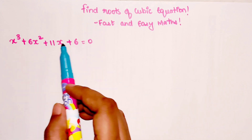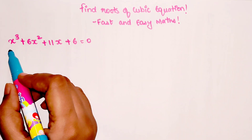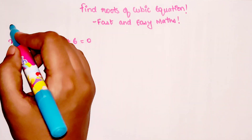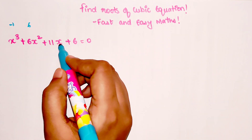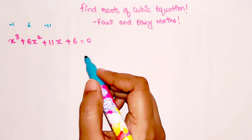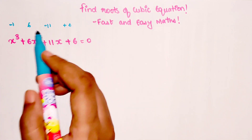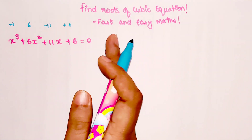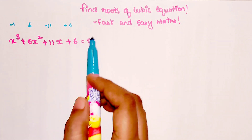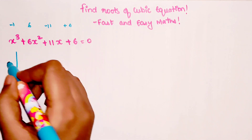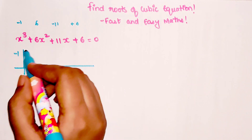We have everything in plus here, so putting plus one will not give zero. Let's try minus one: (-1)³ gives minus one, plus 6 into (1)² gives plus six, plus 11 into (−1) gives minus eleven, and plus six stays plus six. Six plus six is twelve, minus one minus eleven is minus twelve, so the answer becomes zero. Therefore, minus one is one of my roots.